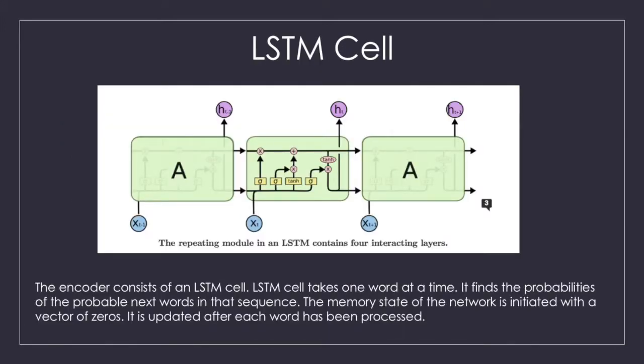RNNs were used in order to not treat the inputs independently but instead memorize and use the previous computations. The encoder consists of an LSTM cell. LSTM cell takes one word at a time. It finds the probabilities of the probable next words in that sequence. The memory state of the network is initiated with a vector of zeros. It is updated after each word has been processed.